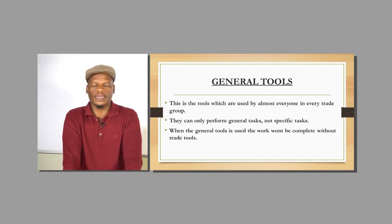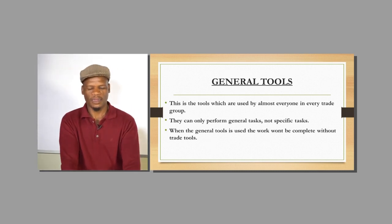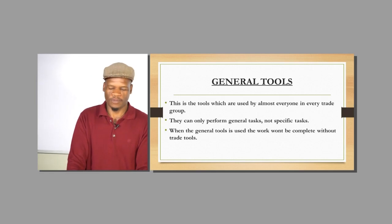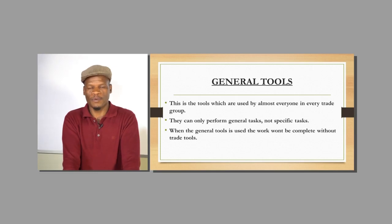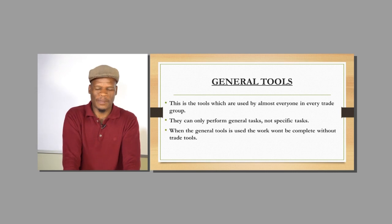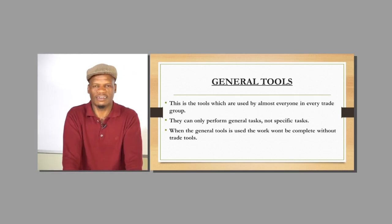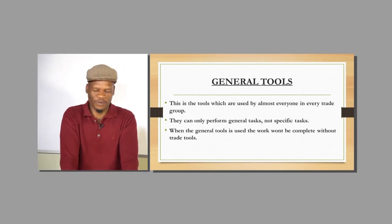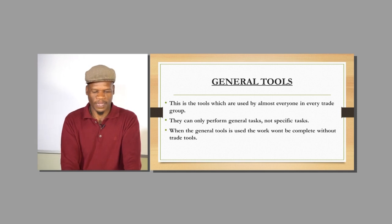The general tools are the tools that are going to be used by mostly all of the trades we have identified — those eight trades in your syllabus. They can only perform general tasks and cannot be specified to any one trade. For instance, a screwdriver is used by a carpenter, a mechanic, and many others. But a tile cutter can only be used by a tiler, so it does not fall under the general tools.